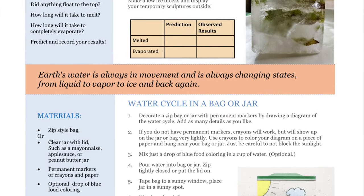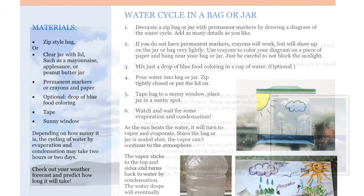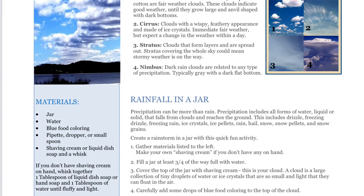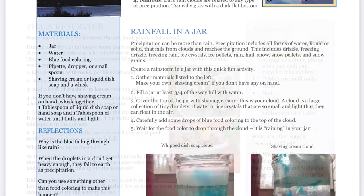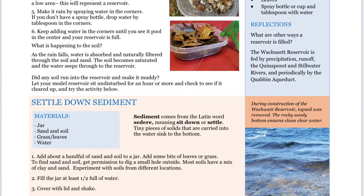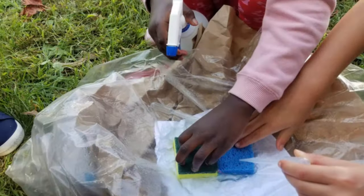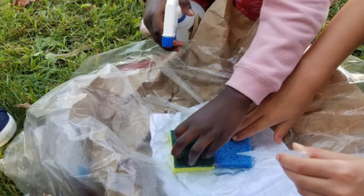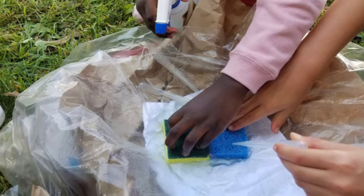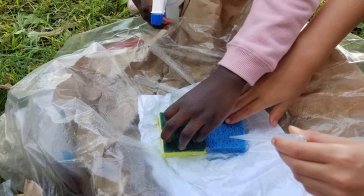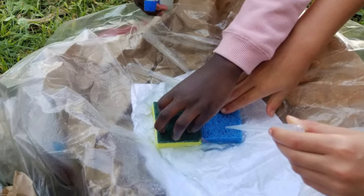For more watershed model and water cycle activities, check out our activity guides or suggested follow-up activities in the resources section of the virtual field trip packet. Try to take a photo or sketch of your watershed before you clean it up, so you can create a diagram as a follow-up activity. You can send photos of your model watershed and any questions to the email at the end or the bottom of the resource page. Thank you for joining me on this virtual field trip. Enjoy creating your own models as you learn how water moves through a watershed.